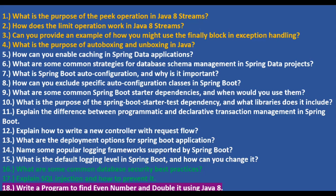What is the purpose of autoboxing and unboxing in Java? Autoboxing is the automatic conversion of a primitive type to its wrapper class type, and unboxing is the opposite — where wrapper classes get converted into primitive types.